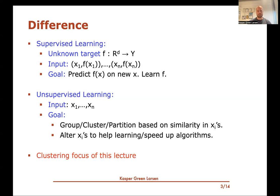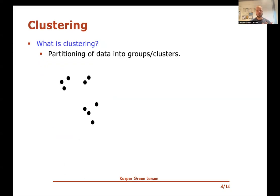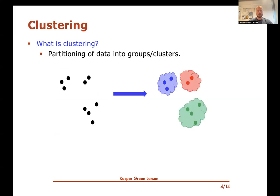In this video and the next two, we'll be talking about clustering. At its core, clustering is just the partitioning of a data set into groups or clusters. For instance, in this data set here consisting of two-dimensional points, clustering could look like this on the right-hand side — you partition these into three groups. Nearby points are in the same cluster. There's a red cluster, a blue cluster, and a green cluster in this picture, and this seems like a natural way to group or cluster them.